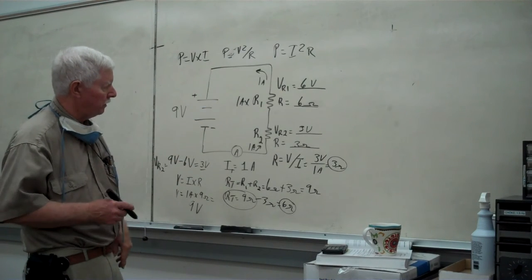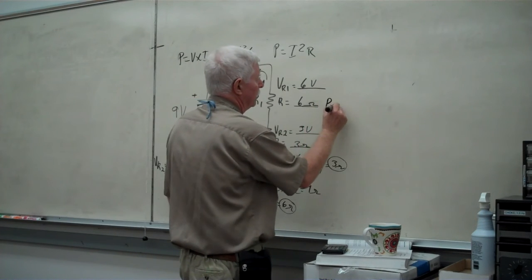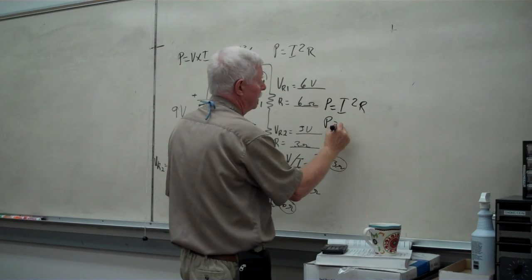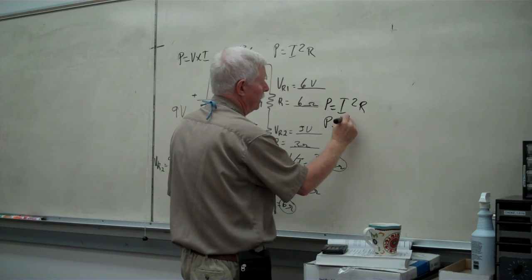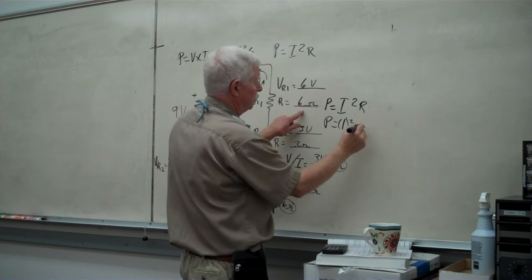For example, in this one here, since we know that we have one amp flowing, we're going to use power equal to I squared R. We're going to take the 1, the square of 1, of course, is equal to 1, times the 6 ohm.